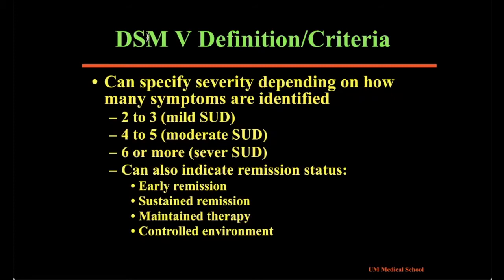In providing a diagnosis, it is also important to specify the level of dependence or severity, which usually depends on the number of criteria or symptoms identified. You can also identify at what stage of remission the patient is at, that is, if the patient is already in recovery.